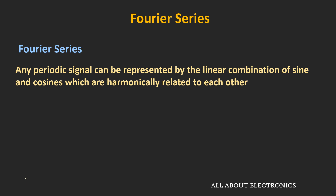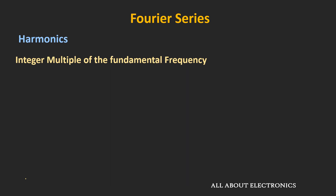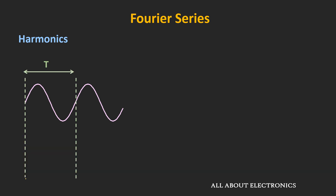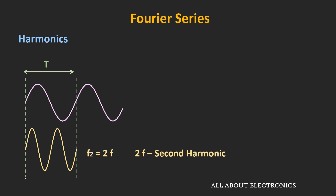Most of you are already aware about harmonics, but let us quickly go through it. The harmonic is the integer multiple of the fundamental frequency. Let's say we have one sinusoidal signal which repeats itself in one time period. The frequency of this signal will be equal to 1/T, and let's call this the fundamental frequency. If another sinusoidal signal repeats itself two times in the same time period, then its frequency is 2f, and this frequency is called the second harmonic of the fundamental frequency.